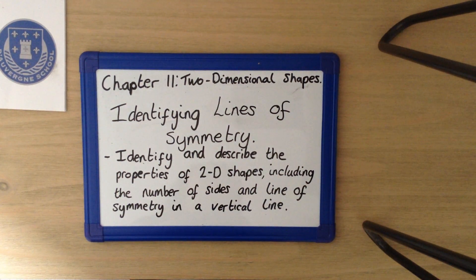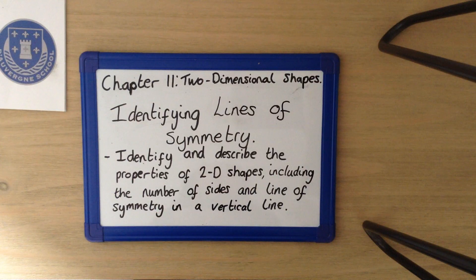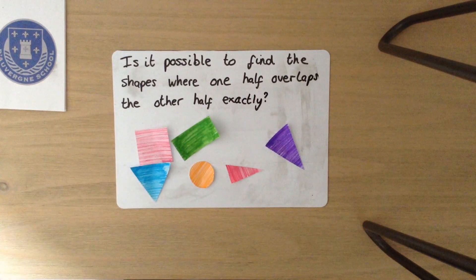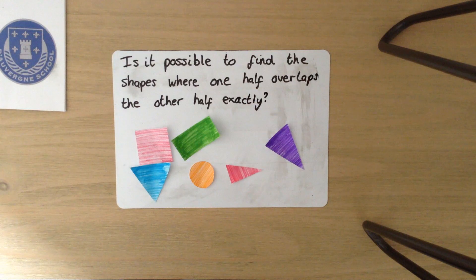Hi Doverne, today we're looking at two-dimensional shapes. We're identifying lines of symmetry. I've got a question here. Is it possible to find the shapes where one half overlaps the other half exactly?